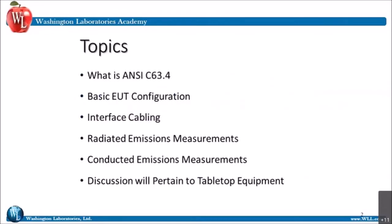What are we going to look at? We're going to look at ANSI C63.4, which is really quite universally accepted as a basic test procedure. How does your unit have to be configured in order to be tested properly? What do we do with all those cables? We'll look at radiated emissions measurements, conducted emission measurements. A lot of this pertains to tabletop equipment, although C63.4 does cover floor-standing devices as well. Feel free to send in questions through the chat function, and we will do our best to answer them in real time.